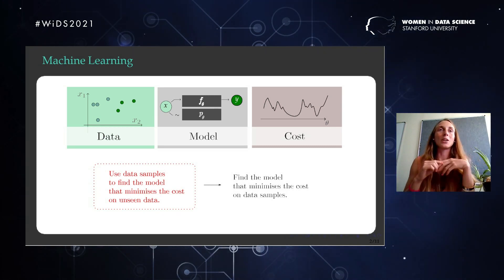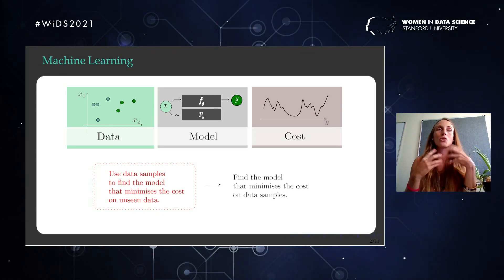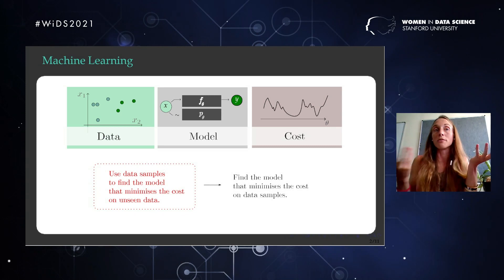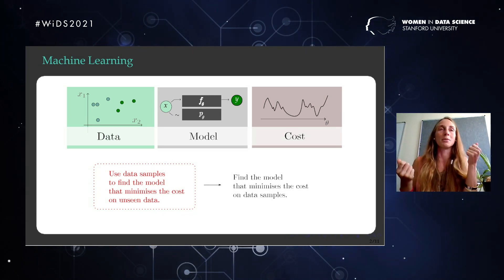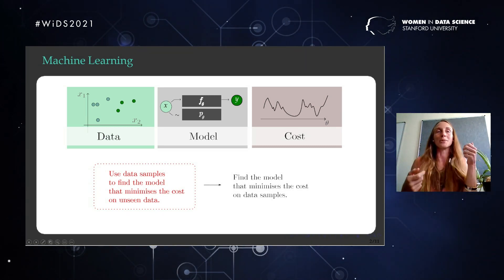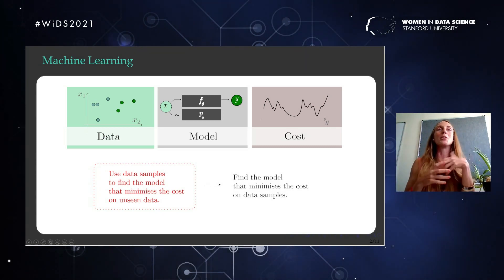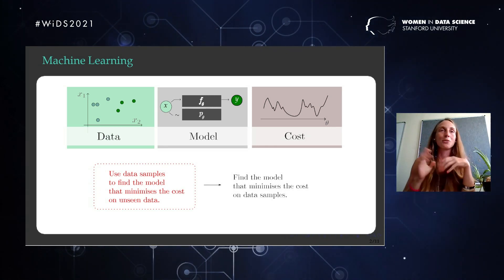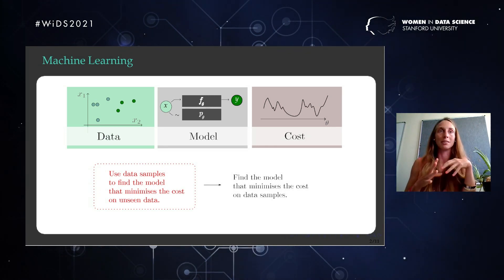What we will focus on is: if the model that reproduces the correlations in the data is represented by a quantum computation. The first statement is that quantum computations can be trained — a result of quantum machine learning from the last couple of years. They can be trained like neural networks, so we can plug them into deep learning pipelines with TensorFlow and PyTorch these days and just train them, which is absolutely fantastic.